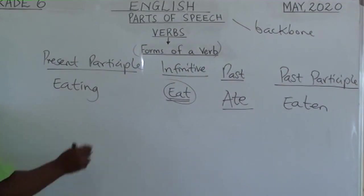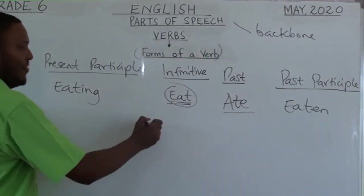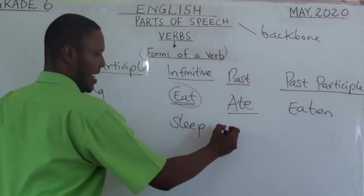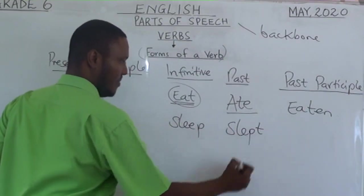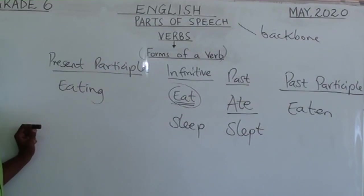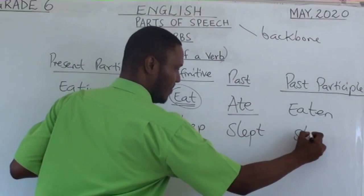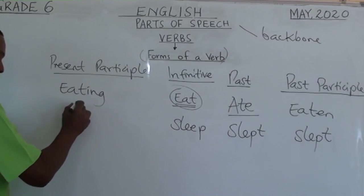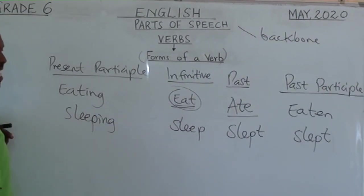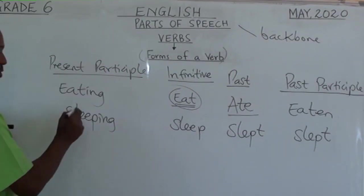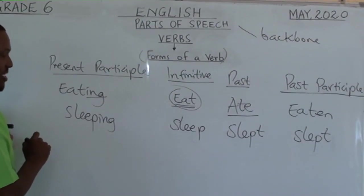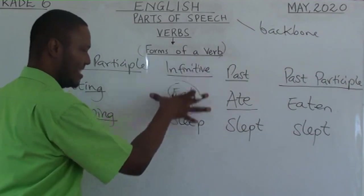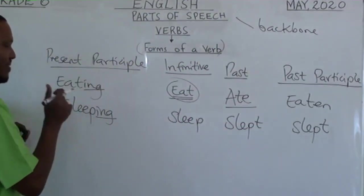Let us have another verb from those we listed earlier — the word sleep. It's in the present form. The past form of sleep is slept. The past participle form of sleep is also slept. And the present participle form of sleep is sleeping. By now you can see a certain trend: all present participles end with -ing. Then you have the present form, the past form, the past participle form, and the present participle form.